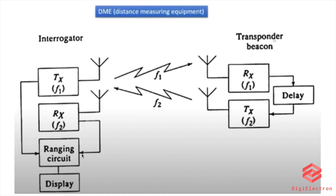This is the distance measured and displayed to the pilot in the display unit. This is the correct display of the aircraft distance in the display unit. This is the ranging circuit.